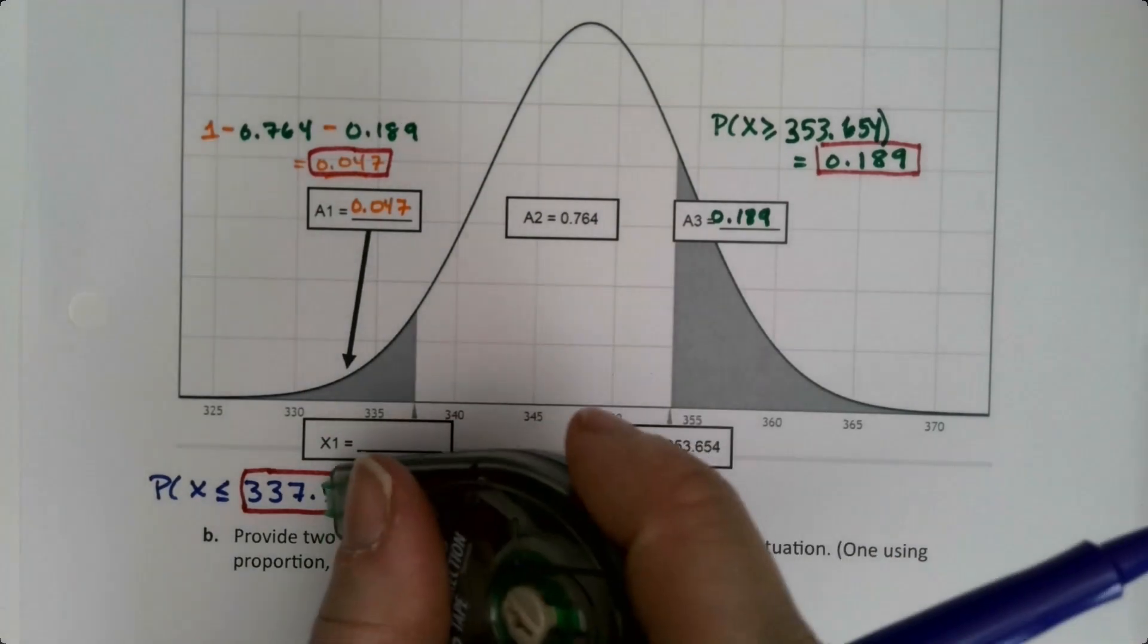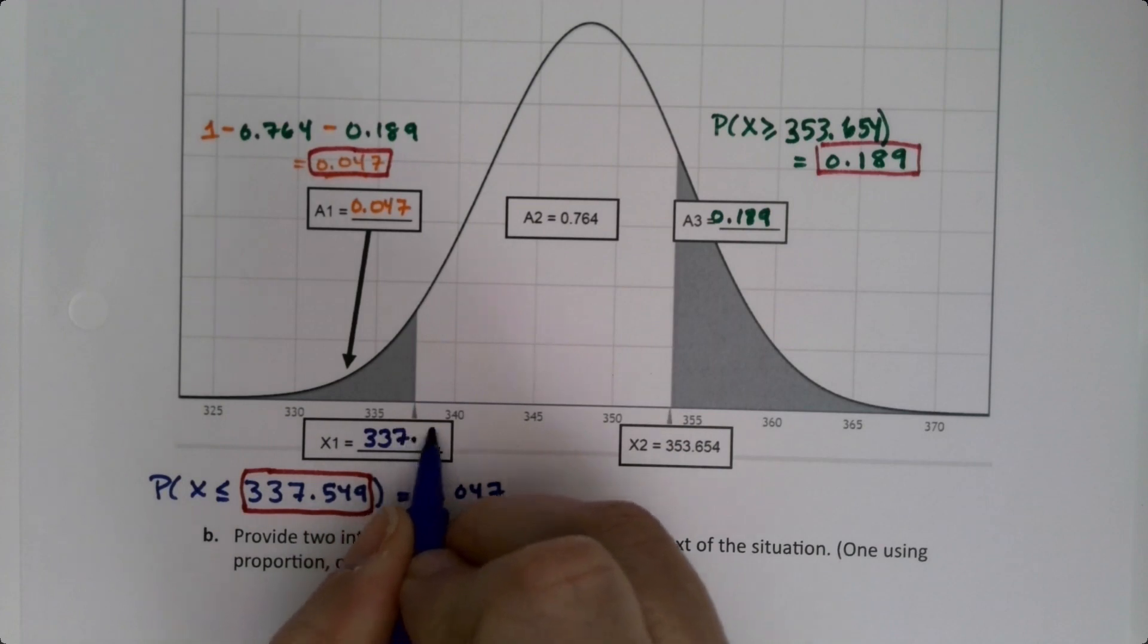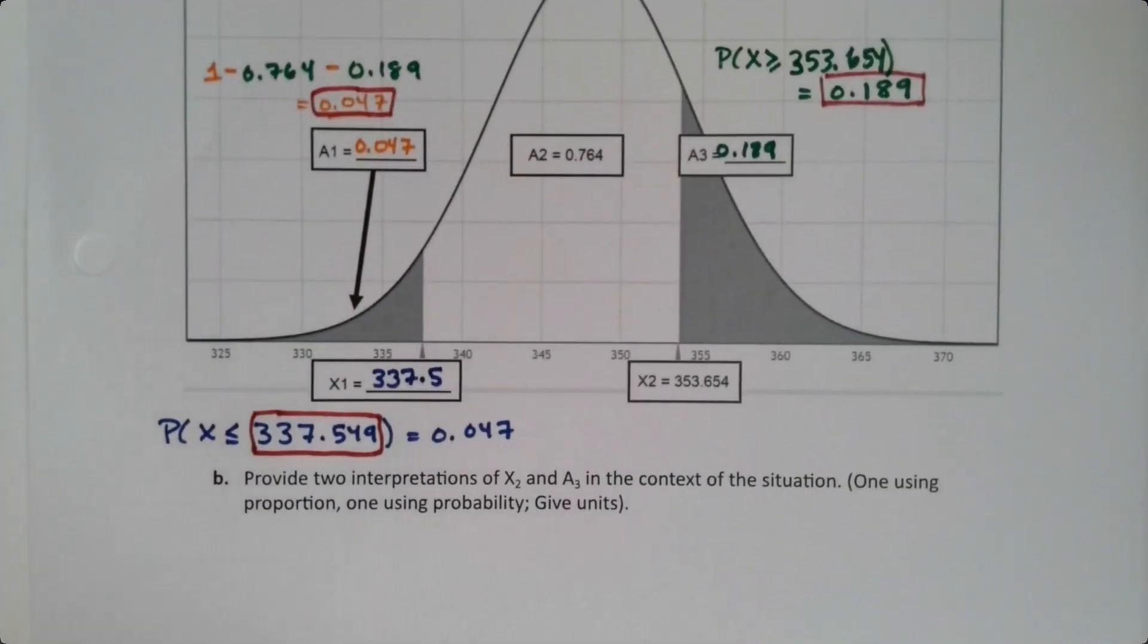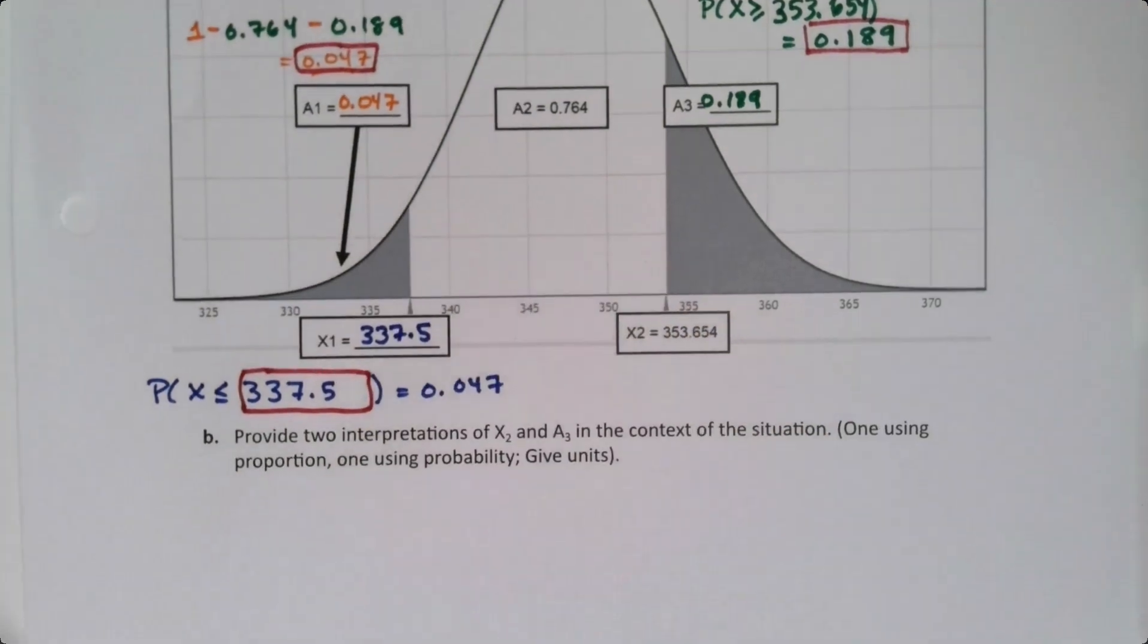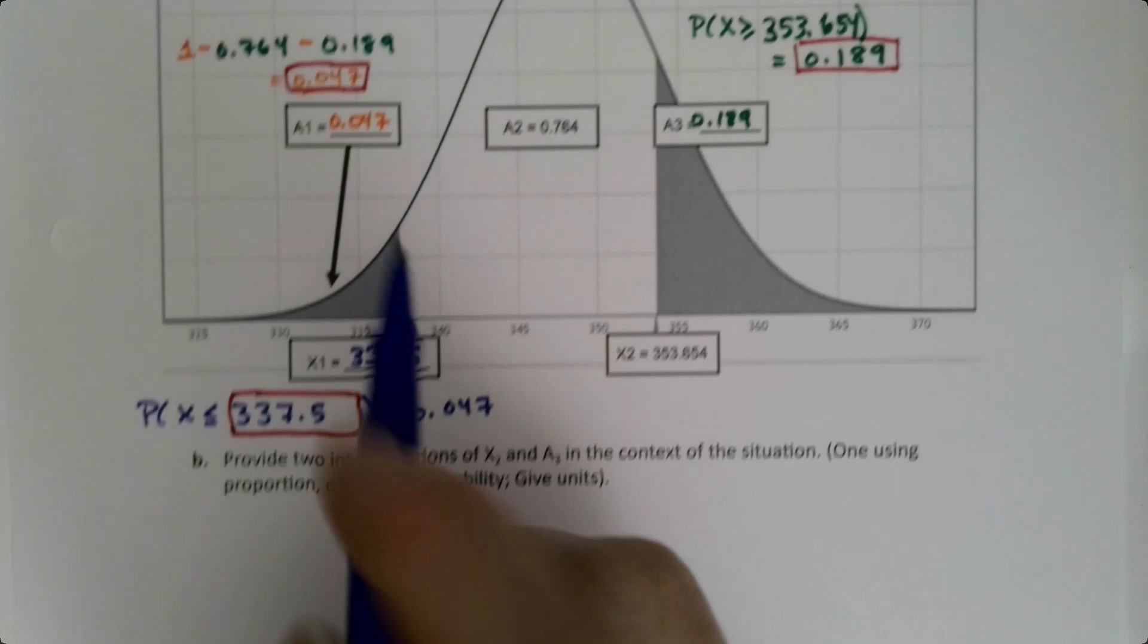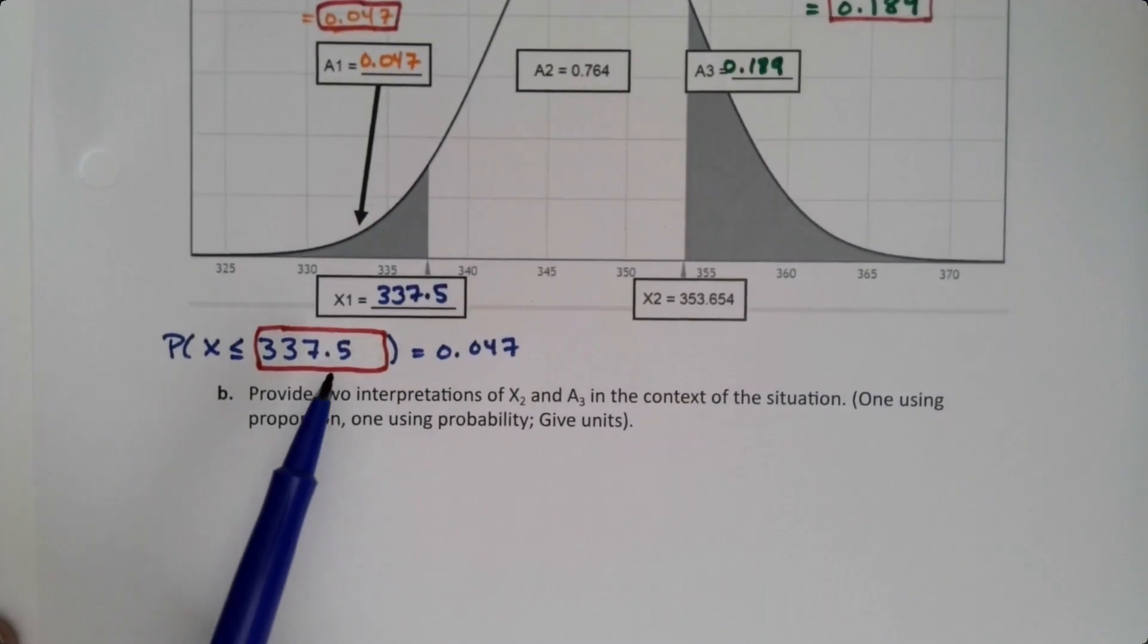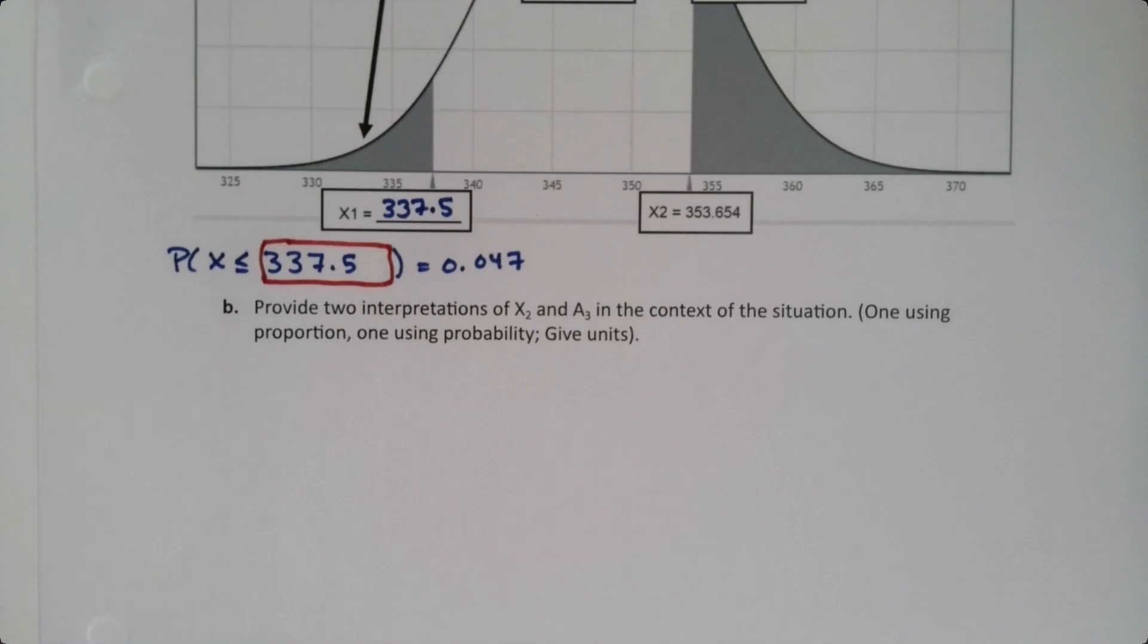Oh, it says it wants one decimal place for the x. Sorry, I didn't see that. So we'll just round this then to 337.5. I wanted one decimal place. So we got three decimal places for the area, we've got one decimal place for the x.